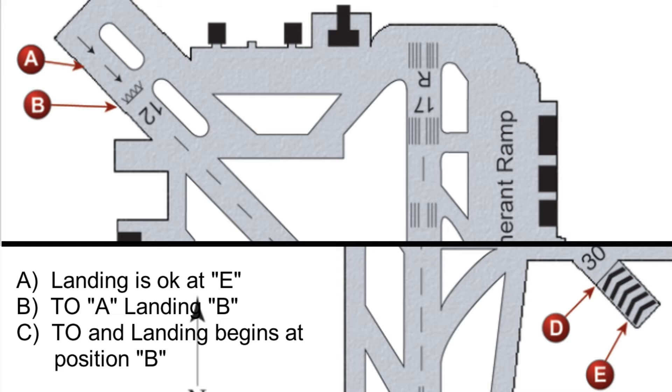Question number two: according to the airport diagram, which statement is true? A) Position E on runway 30 is available for landing. B) Takeoffs may be started at position A on runway 12, and the landing portion of this runway begins at position B. Or C) the takeoff and landing portion of runway 12 begins at position B. The answer is B. The chevrons at point E are not usable for takeoff, landing, or taxi. C is incorrect because the takeoff portion for runway 12 begins at A, not B.